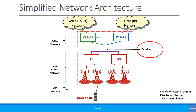Traditionally in GSM networks, these backhaul links were generally E1 and T1 links — very low data rate links. E1 was 2 Mbps and T1 was 1.5 Mbps. GSM was designed mainly for voice, and data was added later with GPRS, but data rates were still quite low. So these links used to work for 2G and 2.5G networks.